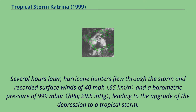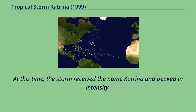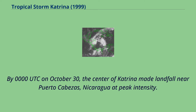Several hours later, hurricane hunters flew through the storm and recorded surface winds of 40 miles per hour and a barometric pressure of 999 mbar, leading to the upgrade of the depression to a tropical storm. At this time, the storm received the name Katrina and peaked in intensity. By 0000 on October 30, the center of Katrina made landfall near Puerto Cabezas, Nicaragua at peak intensity.